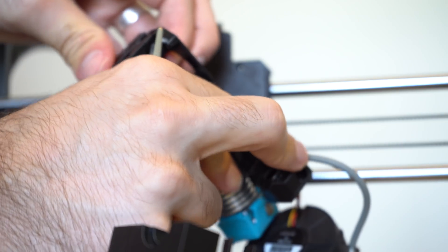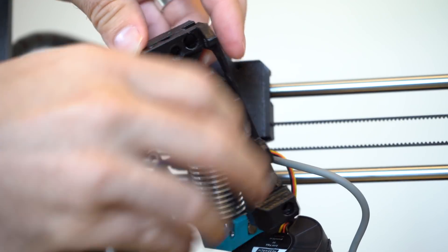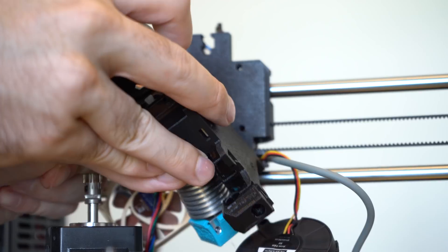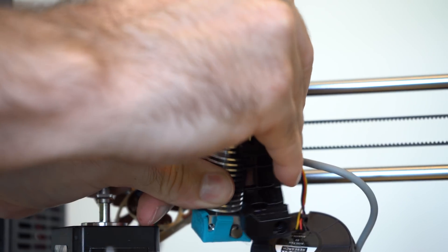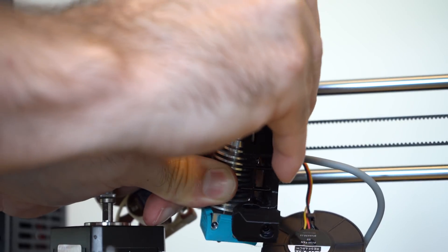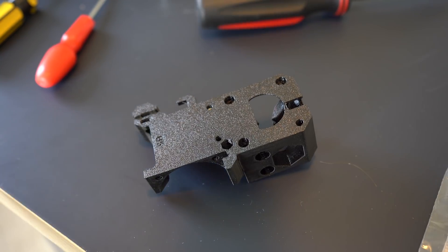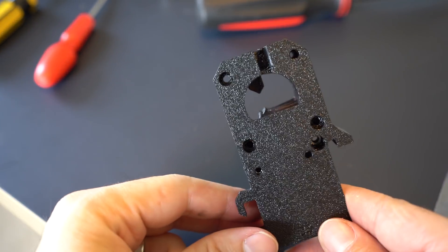Alright, so I struggled for a while trying to figure out how to remove the extruder and what you do is actually get two screwdrivers and you put one at the top and you put one from the back. But you have to have it attached to the X-carriage, makes it easier to remove that way.